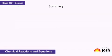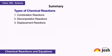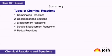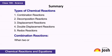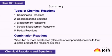In this video, we learnt that the types of chemical reactions are combination reactions, decomposition reactions, displacement reactions, double displacement reactions, and redox reactions. The definition of combination reactions is: when two or more substances — elements or compounds — combine to form a single product, the reactions are called combination reactions.